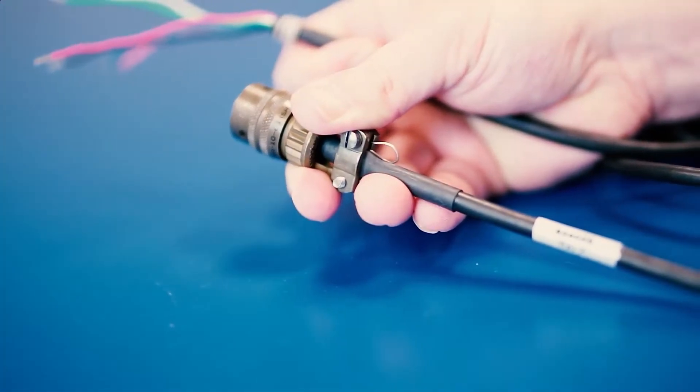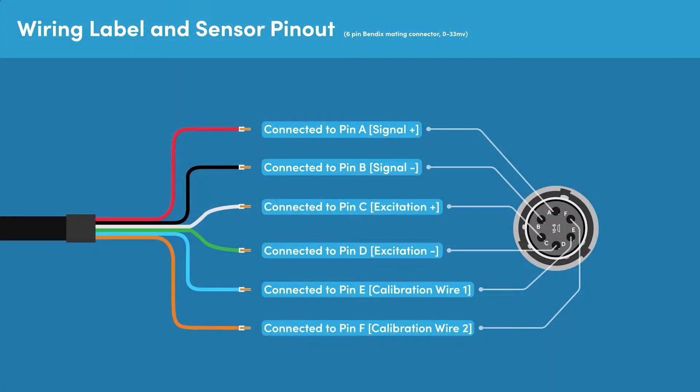The standard connection pinout for a cable used with a pressure sensor that has a 0 to 33.3 millivolt output would be as follows. The red wire is connected to pin A and is signal positive. The black wire is connected to pin B and is signal negative.